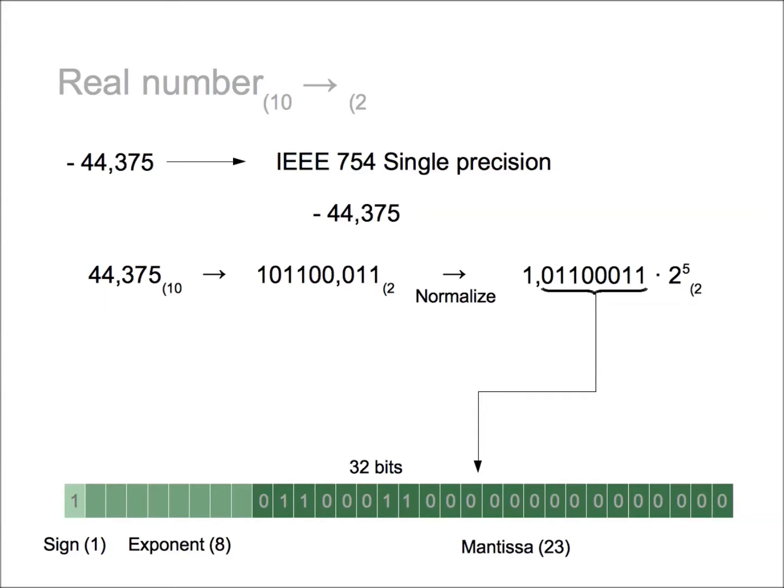The last step is to get the exponent. Our exponent is 5 and we have 8 bits to define it. The IEEE standard uses excess k format to define the exponent with k equals to 2 raised to n minus 1 minus 1.